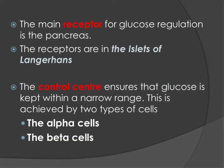The main receptor for glucose regulation is actually inside the pancreas, in a very interestingly named structure called the islets of Langerhans. It's a name you will always remember because it's very distinctive. The main receptor is the islets of Langerhans in the pancreas. However, it is also important to note that there are insulin receptors in the liver — they also act as a receptor but are less significant, and we'll look at that shortly.